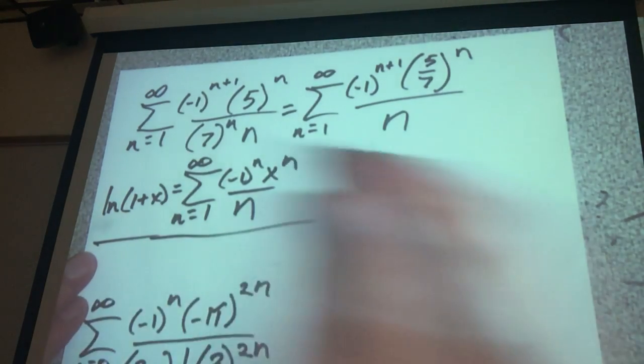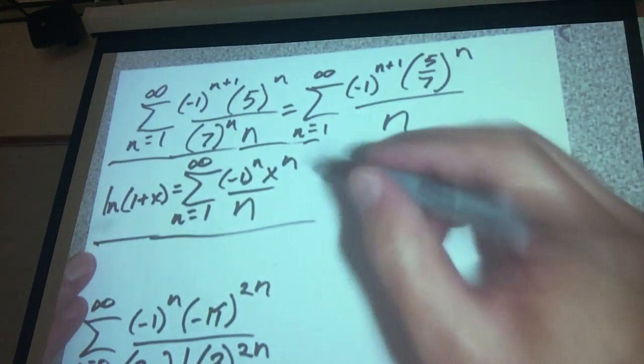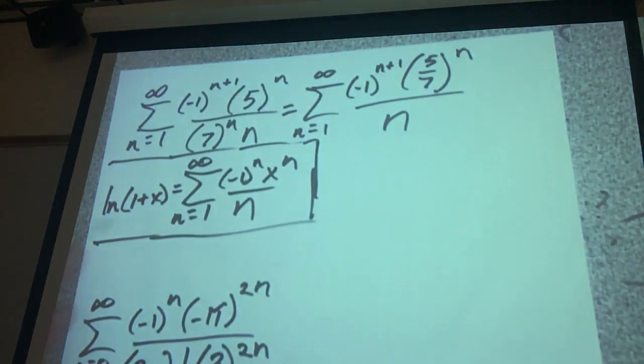So let's isolate this right here. So this is the identity that we are going to use, and this is true if we are between negative 1 and 1, not including negative 1, just including positive 1.